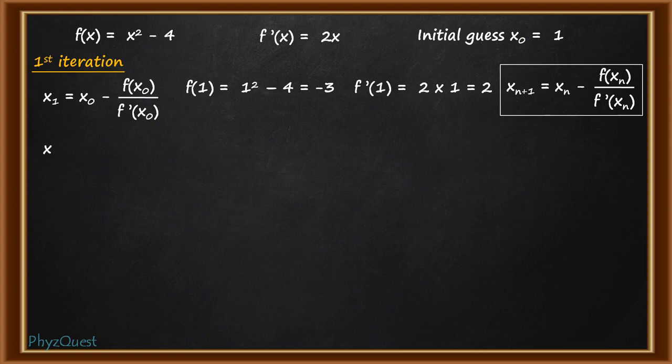Putting the values here, x1 will be equal to 1 - (-3/2)/2 which is equal to 1 + 3/2 which is equal to 5/2. We have got x1.